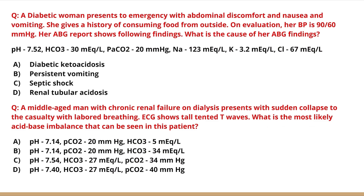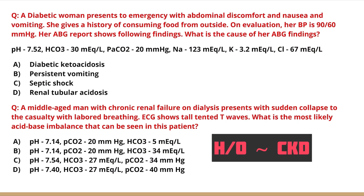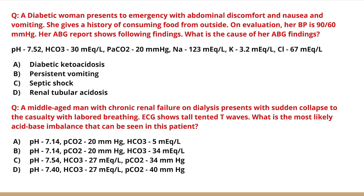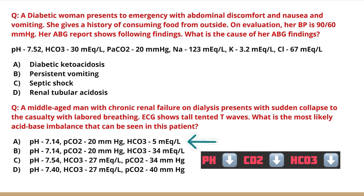Question 4: A middle-aged man with chronic renal failure on dialysis presents with sudden collapse; ECG shows tall tented T-waves. CKD patients generally have acidosis, so alkalosis options are ruled out. In CKD there is a metabolic process. Looking at option A: pH is low, PCO2 is low, bicarbonate is also low — direction of change is the same — metabolic. Option B has bicarbonate going up, which doesn't match. Answer: option A — metabolic acidosis.